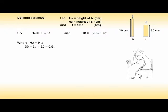When the heights are the same we can write 30 minus 2t equal to 20 minus 0.5t. Now solve for t. Press pause to try it or continue.